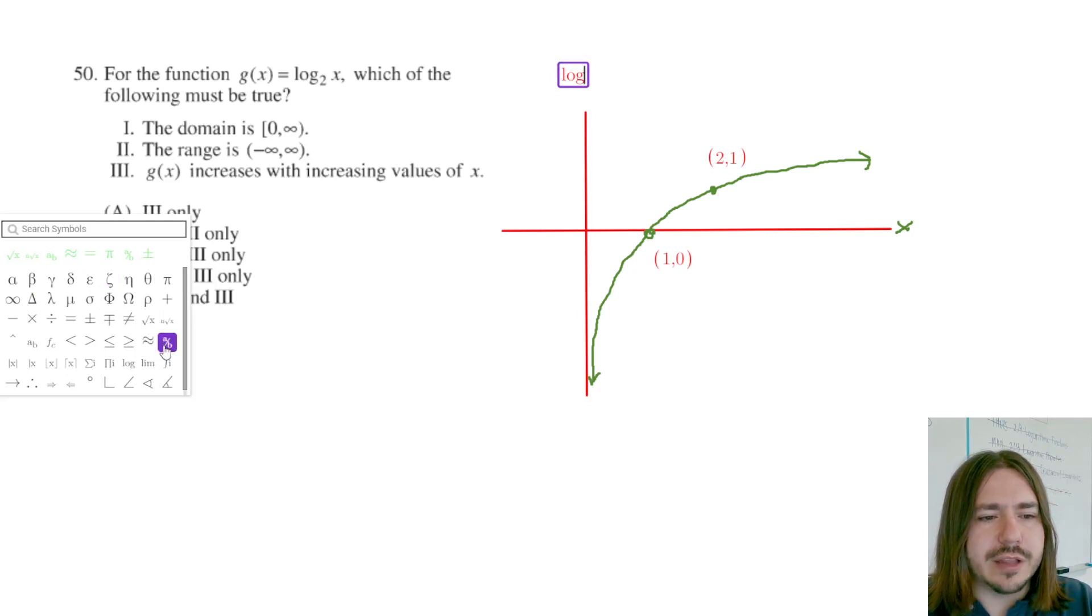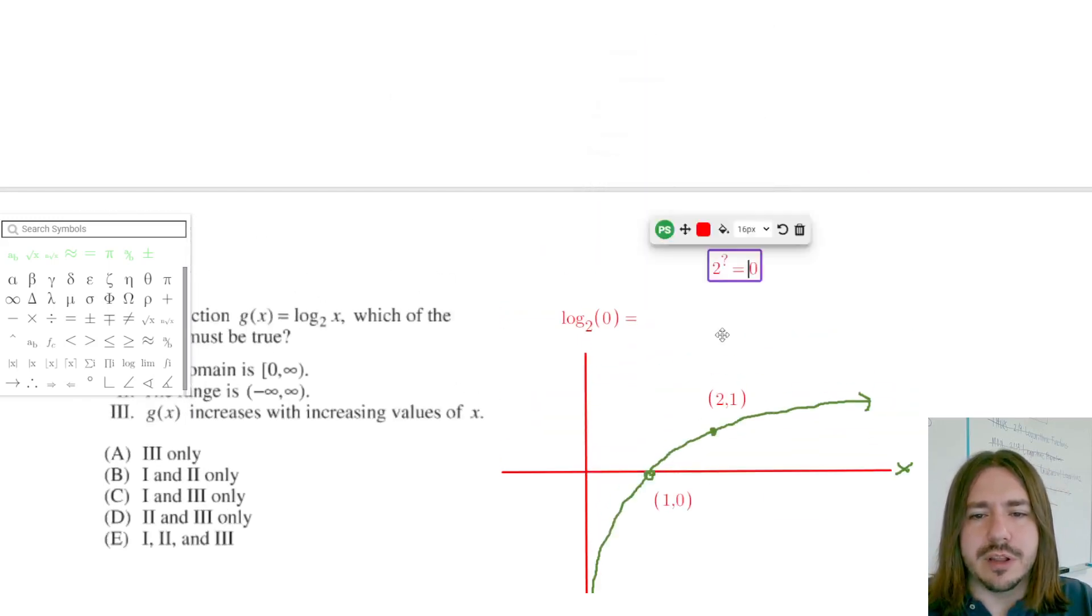If you think about what the function actually means, it should make sense why 0 would not be allowed to be an input. If I were to write log base 2 of 0 and ask you what's that equal, well, what you're trying to answer when you're trying to evaluate this logarithm is you're trying to say, 2 to what power is 0?